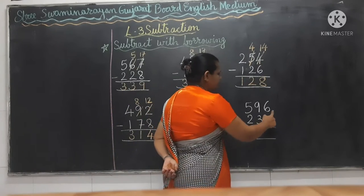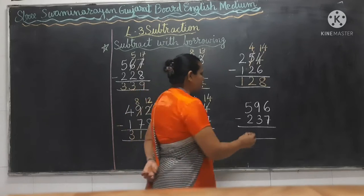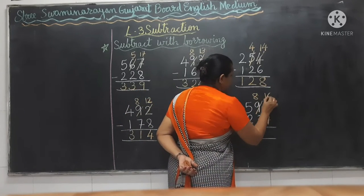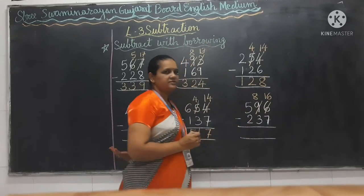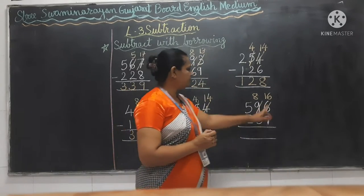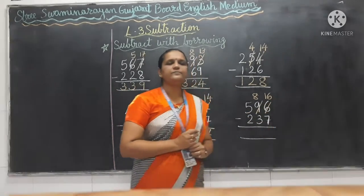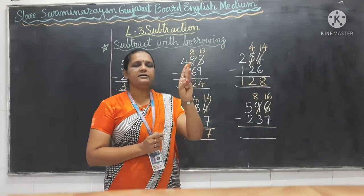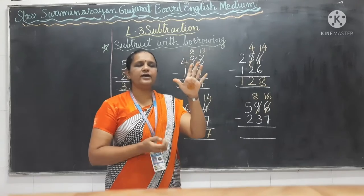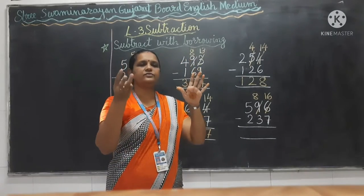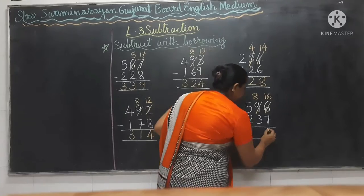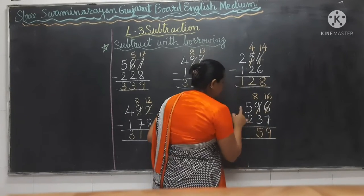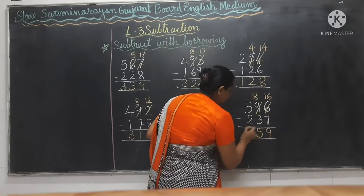Again from 6 you have to cut 7, so again you have to borrow. We get 9, and now 16. From this 16 you have to cut 7 — counting after 7: 8, 9, 10, 11, 12, 13, 14, 15, 16 — means 9. So 8 minus 3 is 5; 5 minus 2 is 3.